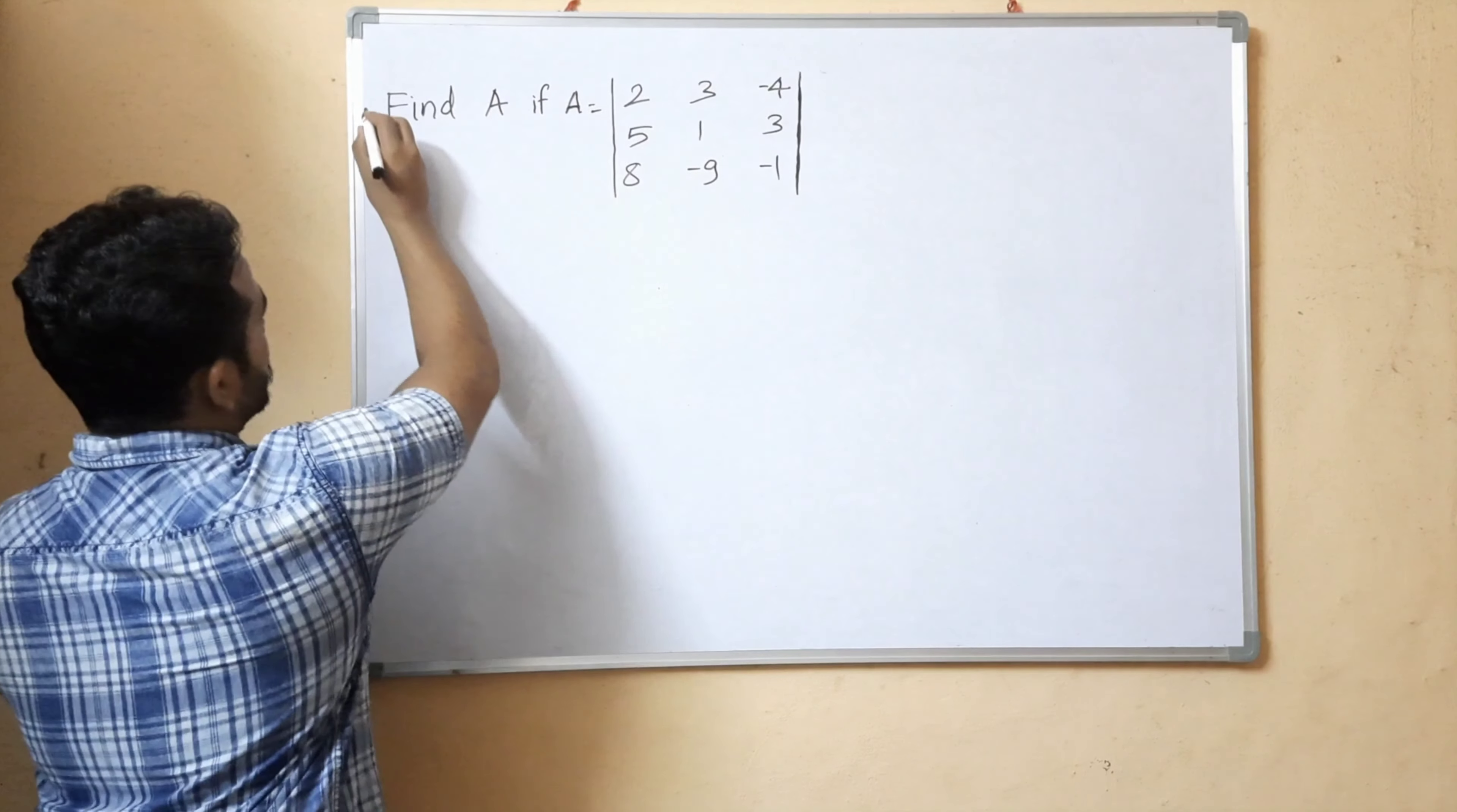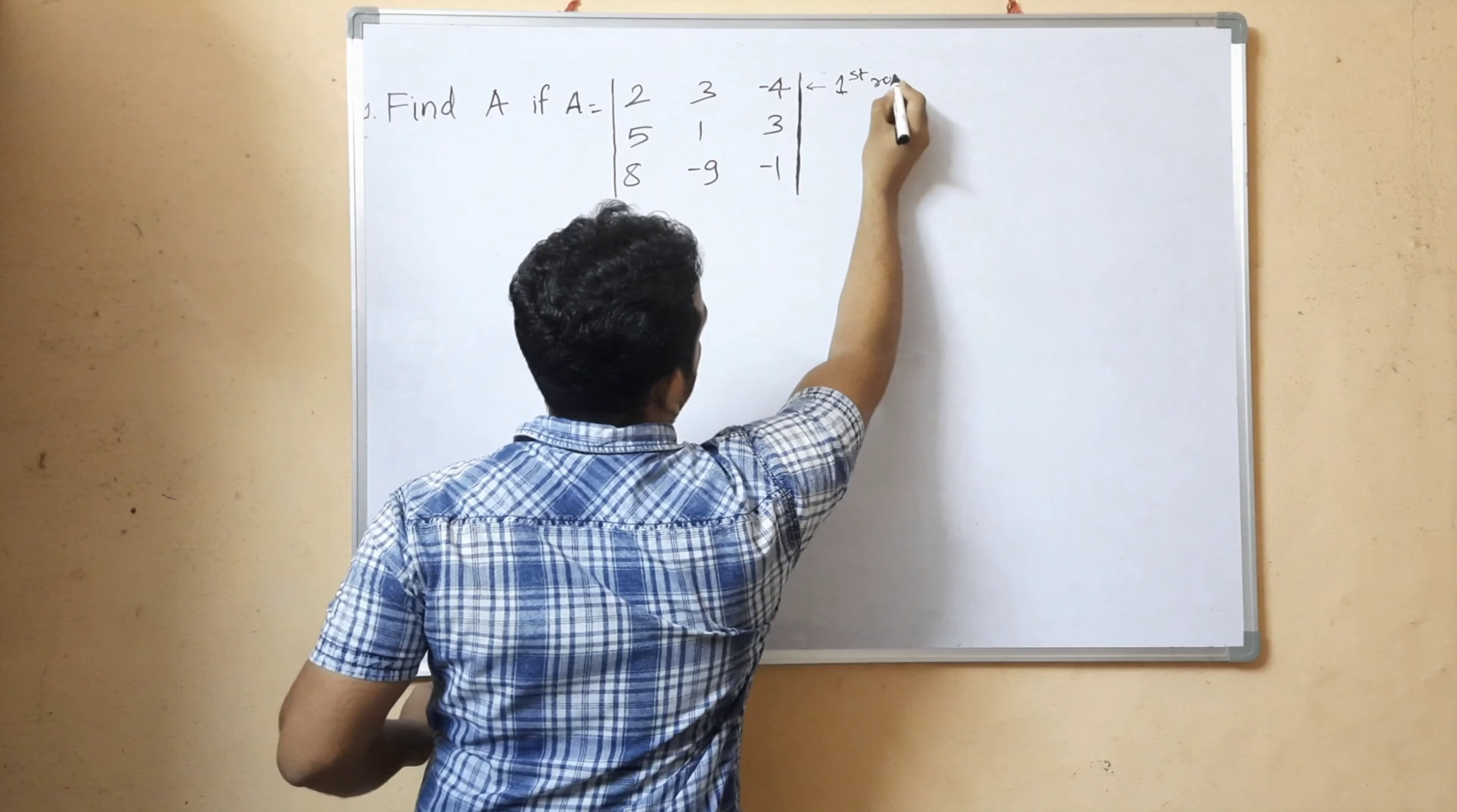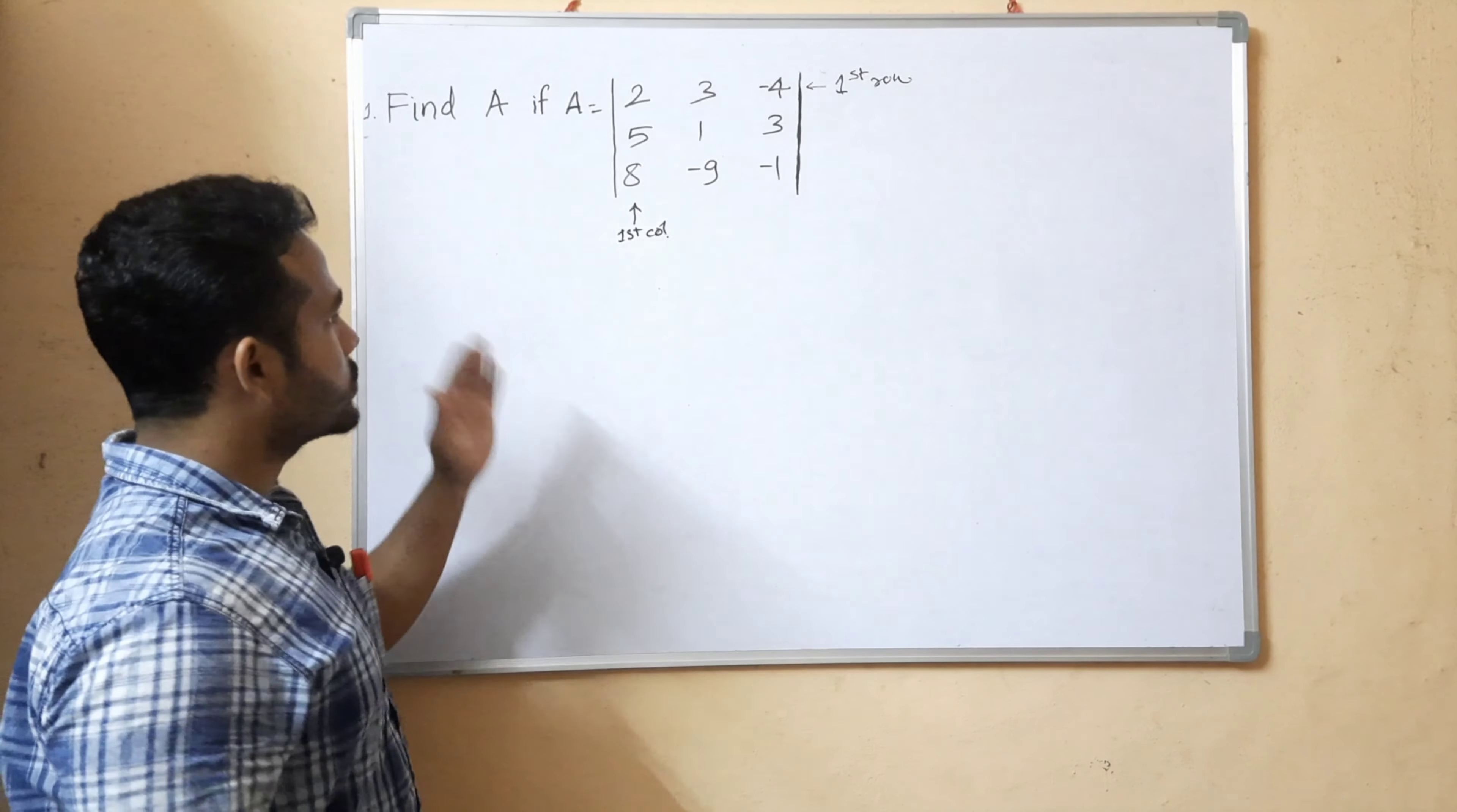The question is: find A if A is equal to this is the first row and this is the first column. So now we will solve the column.